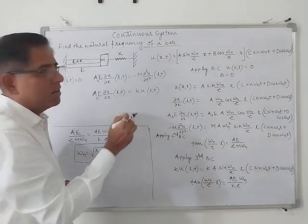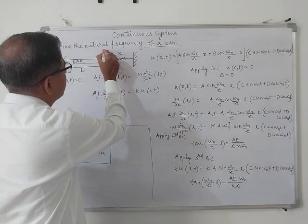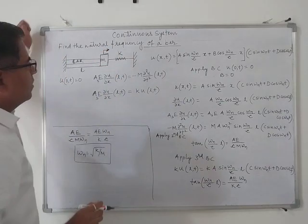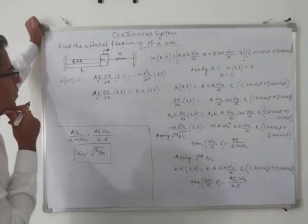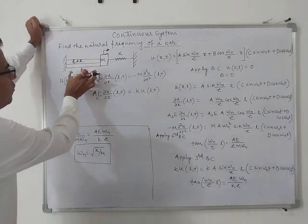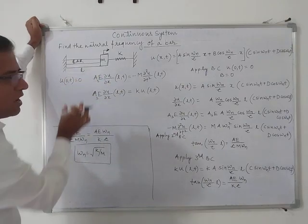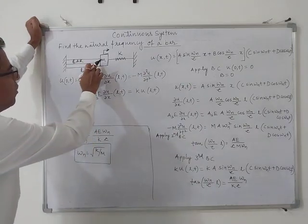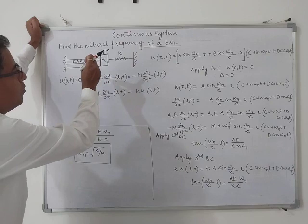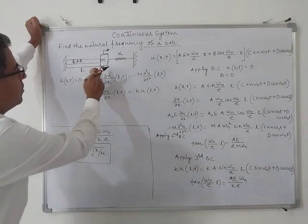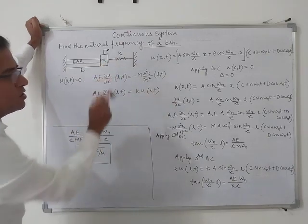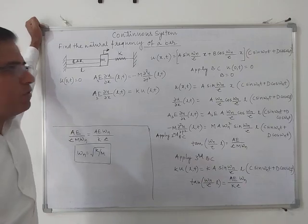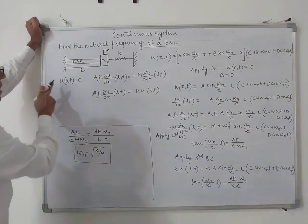The bar is being pulled by a spring having stiffness K, so this is the displacement. Now first consider this bar as a fixed-free type of bar, where the end of the bar is being pulled by the mass and the spring. We will now see what the boundary conditions are for this particular case.